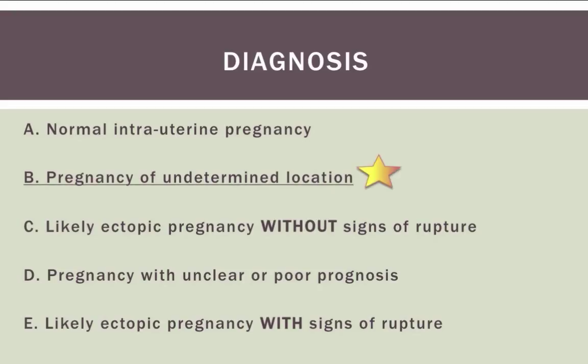Pregnancy of undetermined location - even with the higher HCG. There is a significant percentage of pregnancies, like one in 12 or one in six, that will be normal despite not having seen an intrauterine pregnancy with an HCG above the discriminatory zone. So you cannot rule out ectopic, you cannot rule out normal pregnancy, you cannot rule out miscarriage yet, even with this higher HCG level.